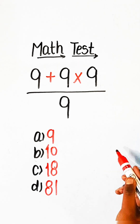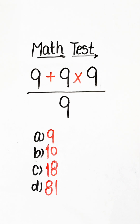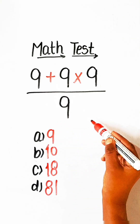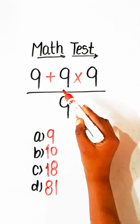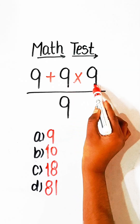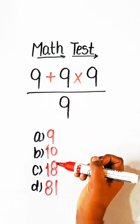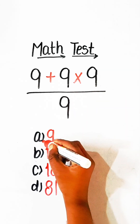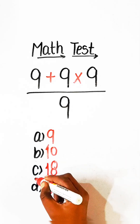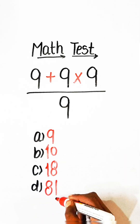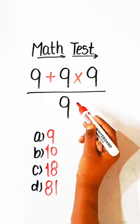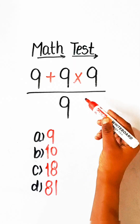Hello everyone. In this video we will solve this basic math equation: 9 plus 9 multiply by 9 upon 9 equals to what? Option C will be that 8. So let's solve this.